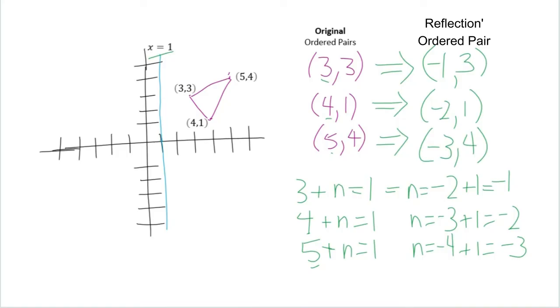If we plot that, we are going to reflect over the x equals 1 reflection line. So (-1, 3) would be here, (-2, 1) would be here, and (-3, 4) would be here.